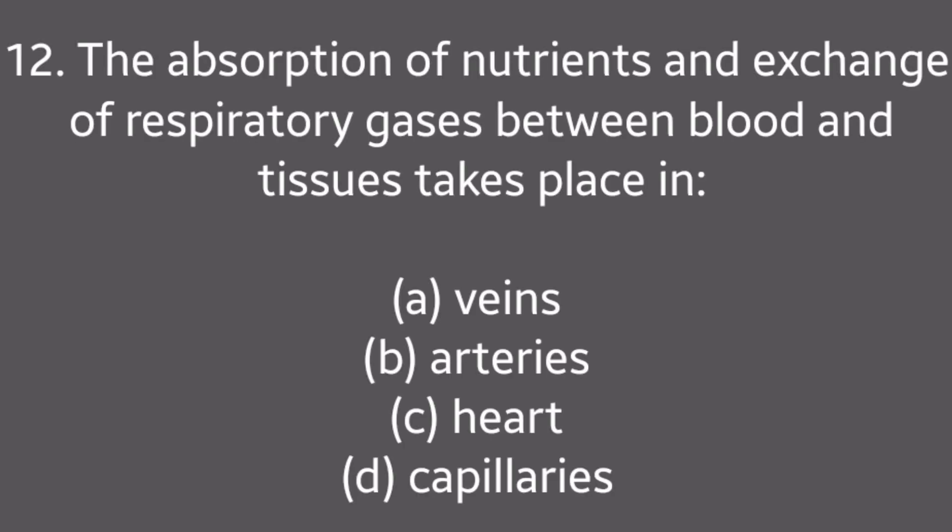Question No. 12: The absorption of nutrients and exchange of respiratory gases between blood and tissues take place in — Veins, Arteries, Heart, Capillaries. Answer is Option D: Capillaries.